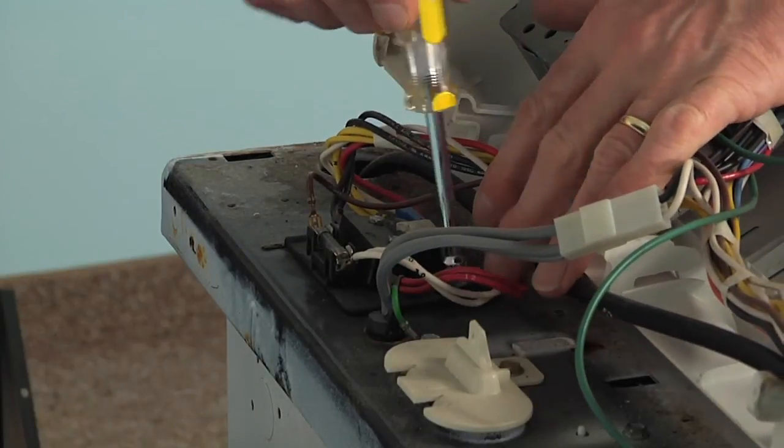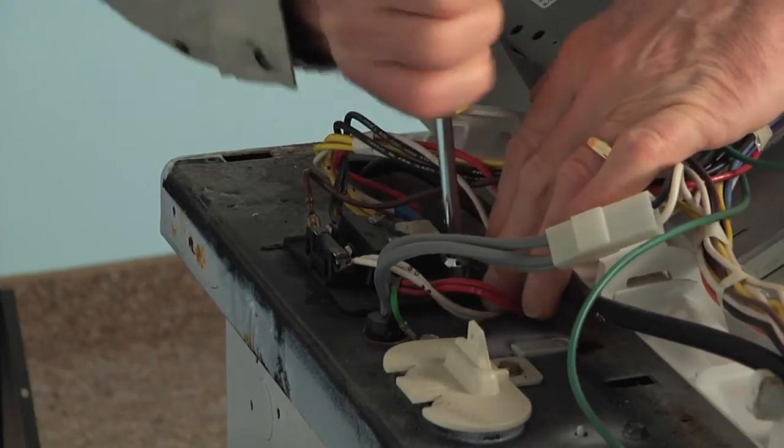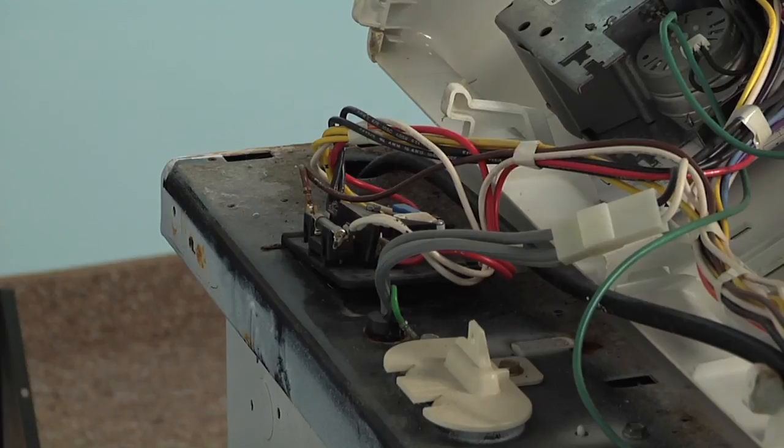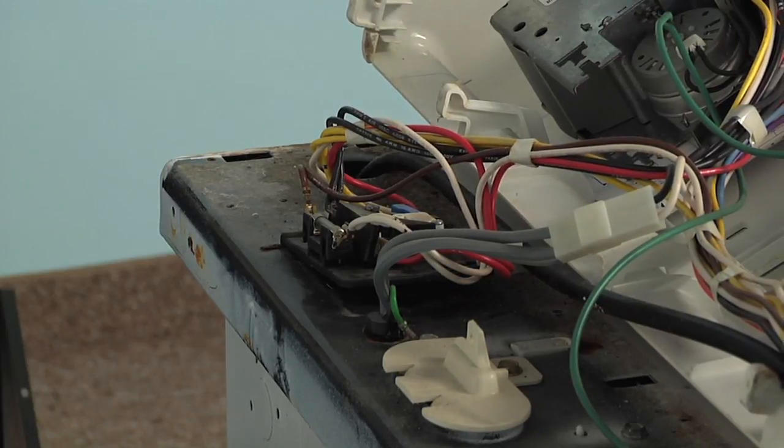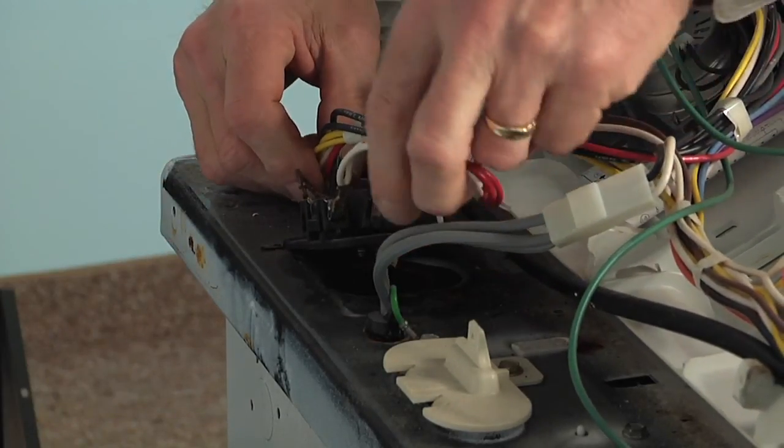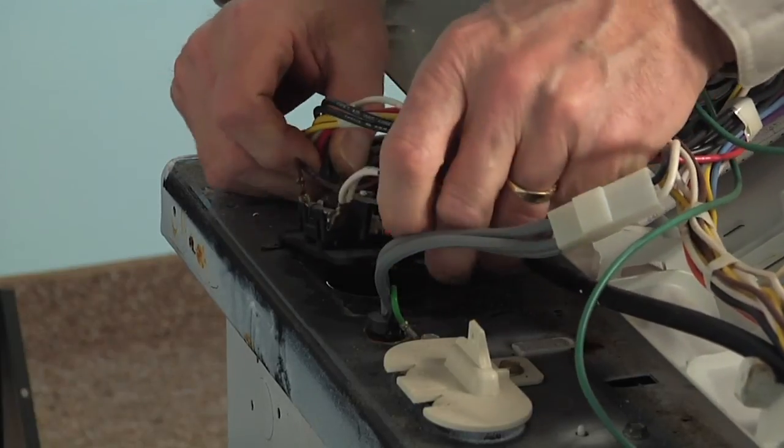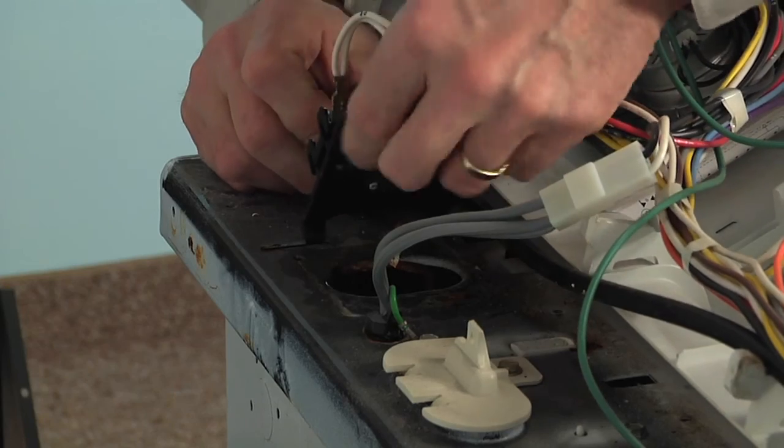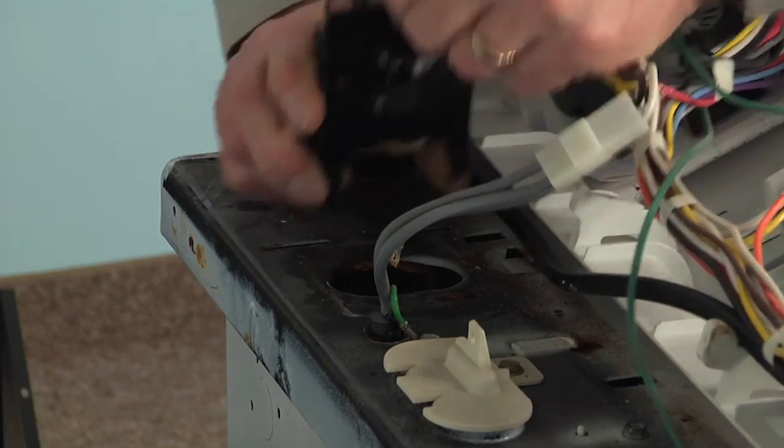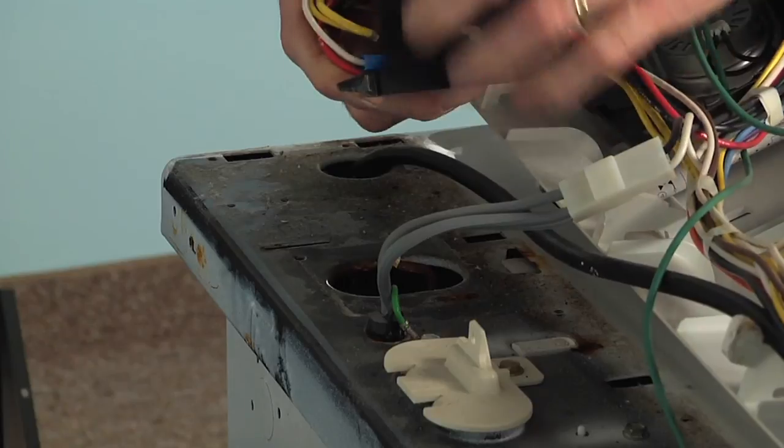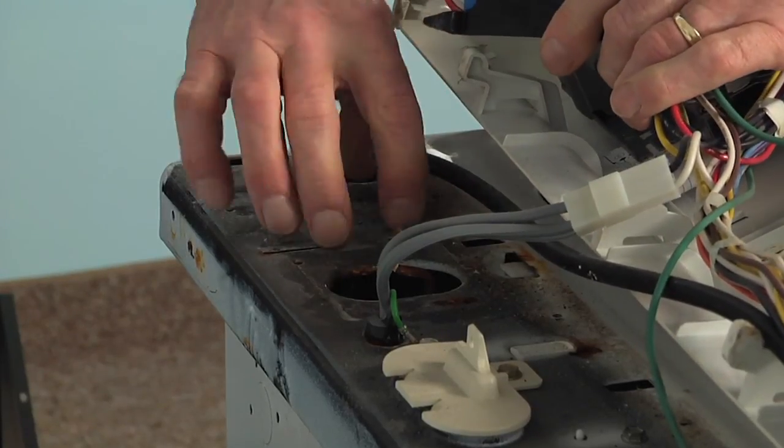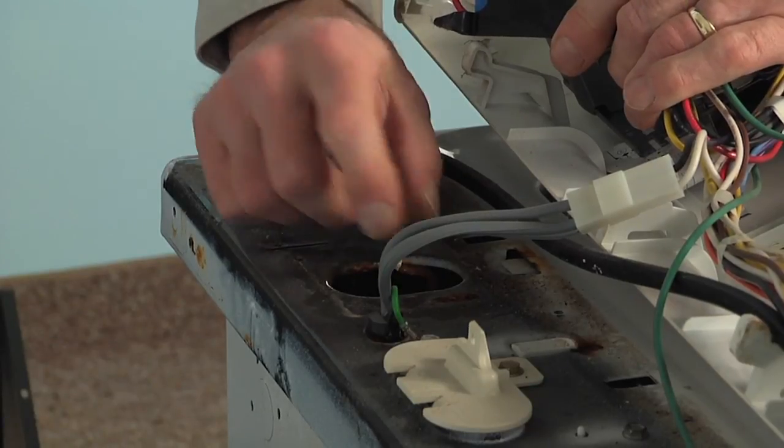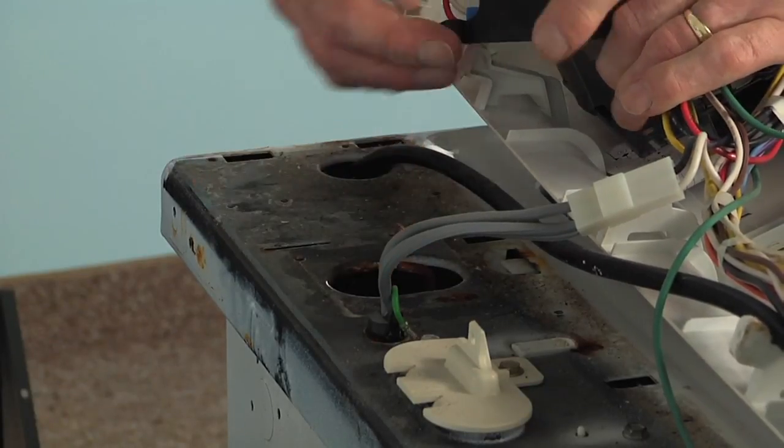I'm going to start by removing that 5-16ths screw. We'll set that aside because we will need to reuse it, and then lift the assembly up on the left side to unhook the two tabs on the right-hand side. Then they fit down into two slotted openings on that main top, and that will also expose the lid switch lever, so be careful that we don't knock that out of position.